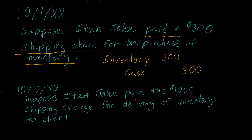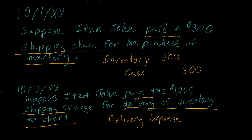On the 7th, It's a Joke paid $1,000 shipping charge for delivery of inventory to a client. So what are the keywords? Paid shipping charge to a client — delivery of inventory. So we actually paid the charges to ship the goods to a client, basically shipping the goods out. And since we did that, this is considered a freight out charge. We know that freight out charges are not included in inventory — they're recorded as an expense. So let's call it a delivery expense. We're going to increase delivery expense with a debit and credit cash.